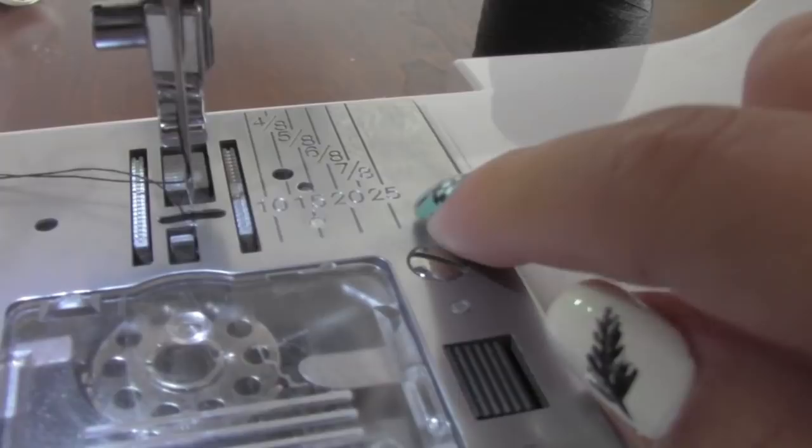To sew a straight line, you can follow these lines the sewing needle plate comes with.